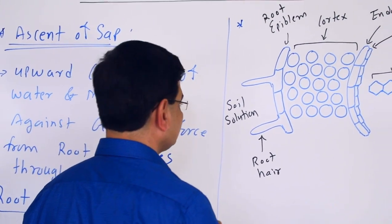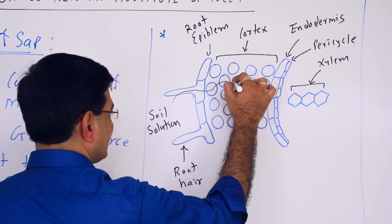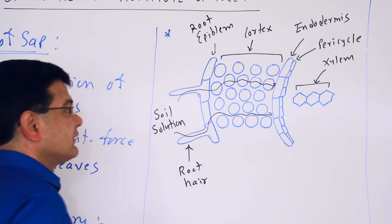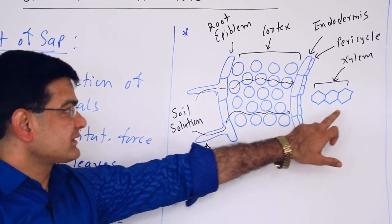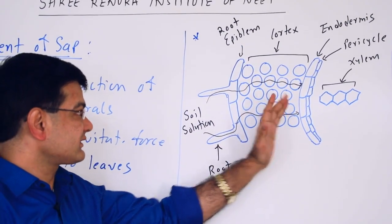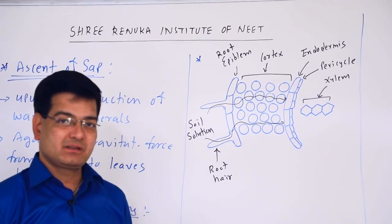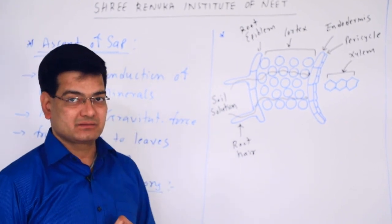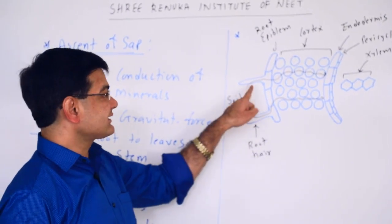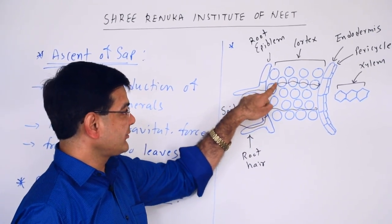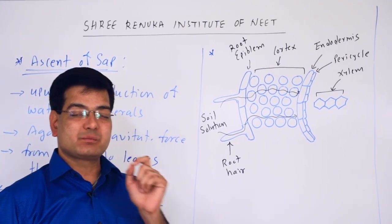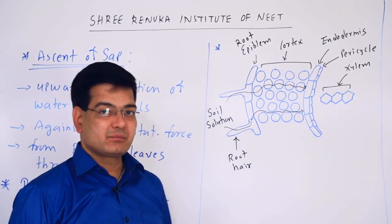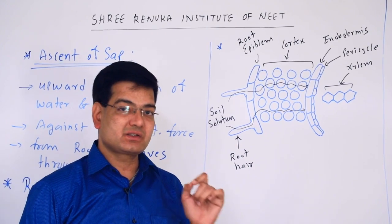Water passes through this pathway, either the apoplast pathway, from cell wall to cell wall without entering into the cell, or the symplast pathway, where water enters into the cell and passes from one cell to other cell through the plasmodesmata. The water can easily move up to the endodermis but cannot cross it due to presence of casparian strips.